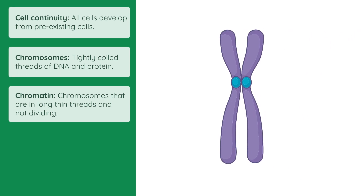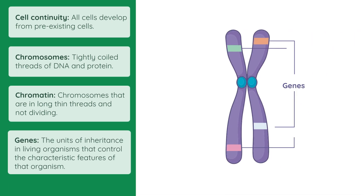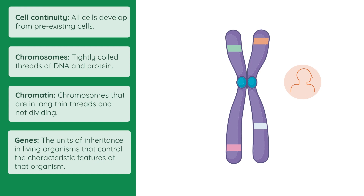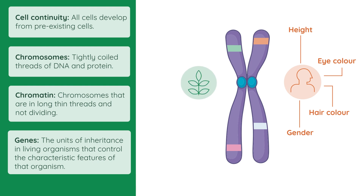Chromosomes contain genes. Genes are the units of inheritance in living organisms, controlling the characteristic features of that organism. In humans, for example, genes control features such as height, eye colour, hair colour, gender, and many thousands more. In plants, genes control petal colour, chlorophyll production, leaf shape, and many, many more.